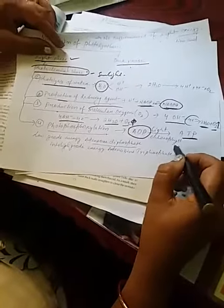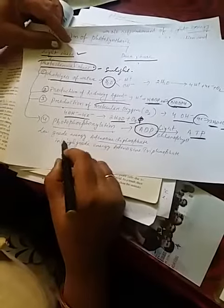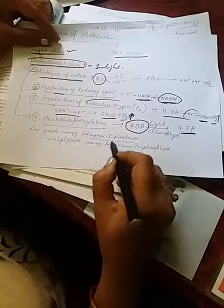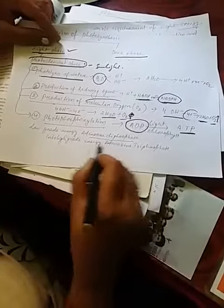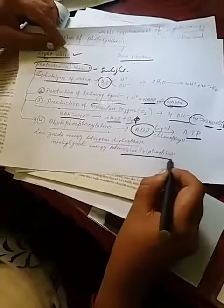Adenosine triphosphate in presence of sunlight and in the chlorophyll. And this ADP is the low grade energy and that is changed into high grade energy that is adenosine triphosphate.